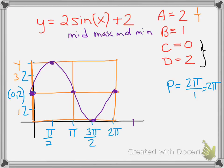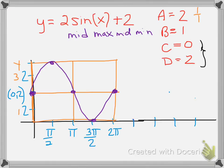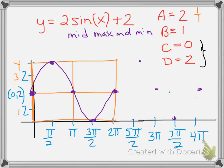If I wanted to continue my graph, I don't have to keep redrawing the window pane, but what I do need to do is continue labeling my x-axis. I would need four more marks in order to complete another cycle — my second cycle. So I would just continually continue the labeling. If my first cycle ended at 2π, the next one's going to end at 4π. Halfway between that would be 3π, and then my in-between marks would be all my pi-over-two values: so 5π/2 and 7π/2. I could take my points — mid, max, middle, min, middle — hitting those points at the next four marks. Now I have two cycles. I could do the same thing in the negative direction if needed.